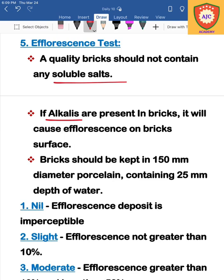The white patches are created on the top surface. If the brick forms these patches, it indicates poor quality. If no white patches form in the efflorescence test, we can use the brick for construction purposes. If powder is formed or white patches are present, the brick is of poor quality and we cannot use it.